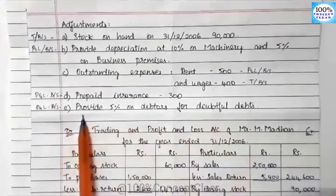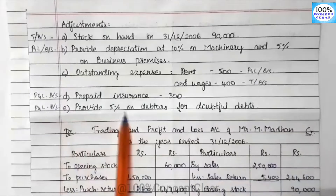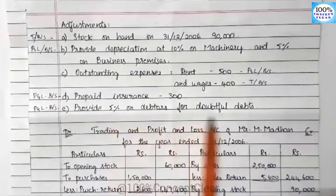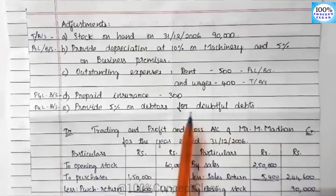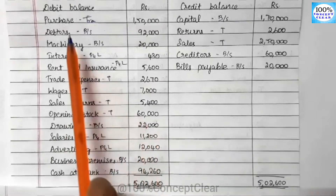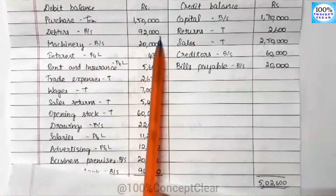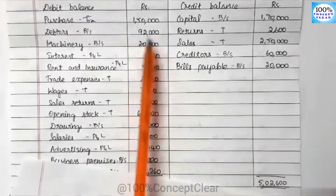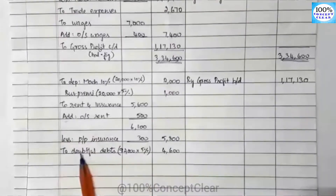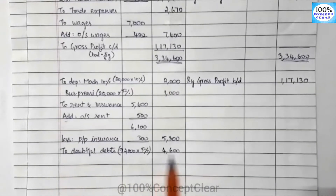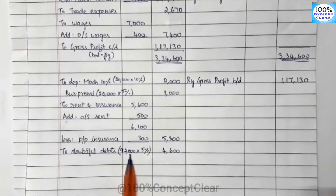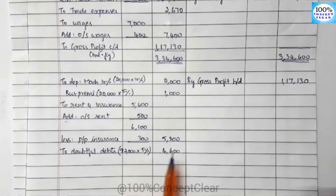Next, provision for doubtful debts. We have to come to P&L account. The debtors amount is $92,000. We have to calculate 5% on $92,000 for doubtful debts. So 2 doubtful debts amount: $92,000 into 5% equals $4,600.